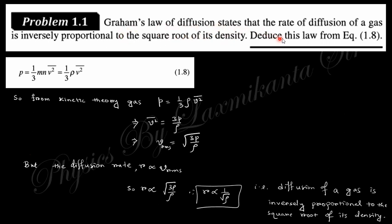The next question is about Graham's law of diffusion. Graham's law states that the rate of diffusion of a gas is inversely proportional to the square root of its density. That means the rate at which molecules diffuse from one portion to another through a membrane is inversely proportional to the square root of the gas density.